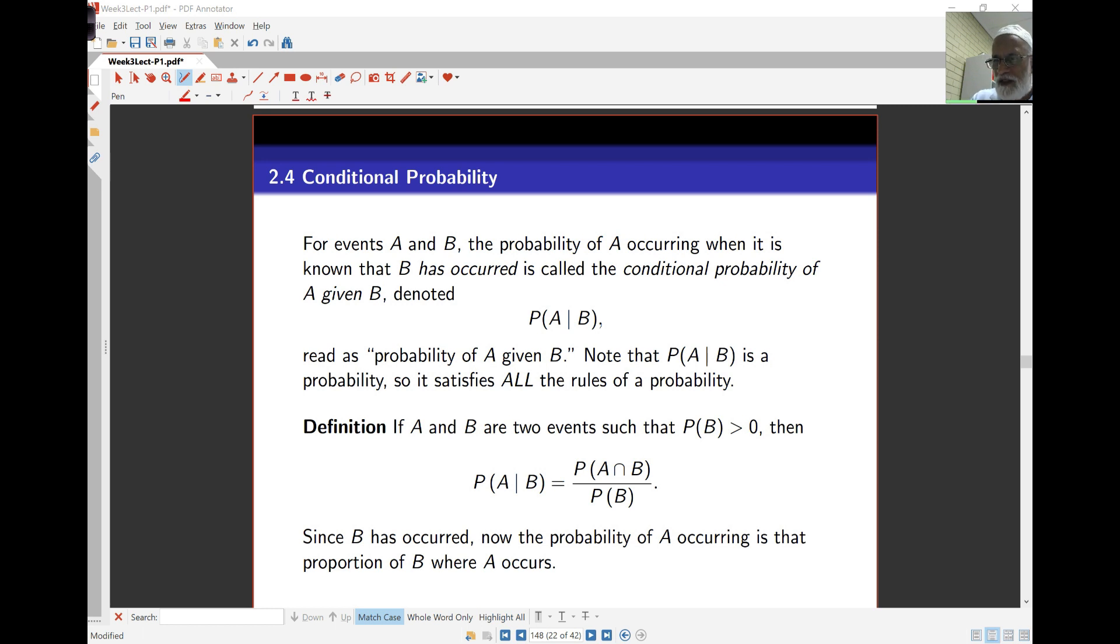So for events A and B, when we know that B has already occurred, and now we want the probability that A occurs, it's called the conditional probability of A given B, and we write it this way, probability of A with a line there B.